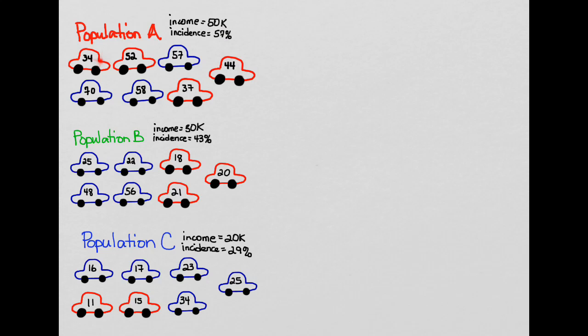Here's the population. It consists of seven individuals, and four out of the seven, which are indicated by the red cars, have gotten in an accident. So that's a 57% incidence. And then the income of each of the individuals is the number that's put on the car. This is the same for population B and C.